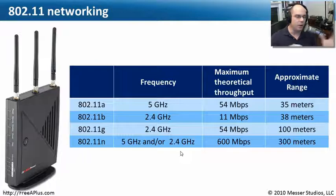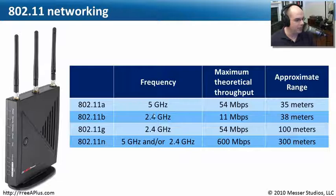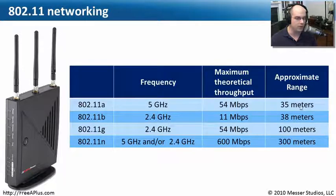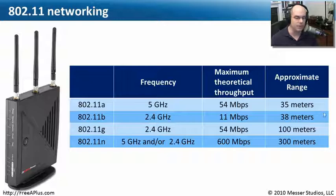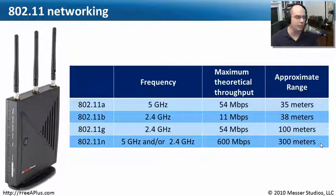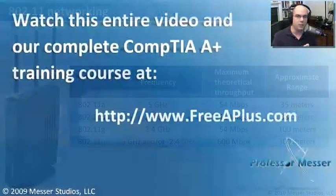To summarize, let's look at 802.11a, b, g, and n. The frequencies, maximum theoretical throughput, and approximate range differ significantly. 802.11a and b were about the same in practical range — around 35 to 40 meters. 802.11g improved to about 100 meters. And the newer 802.11n networks offer about 300 meters of range — a substantial improvement that reflects the evolution of the wireless networking standards.